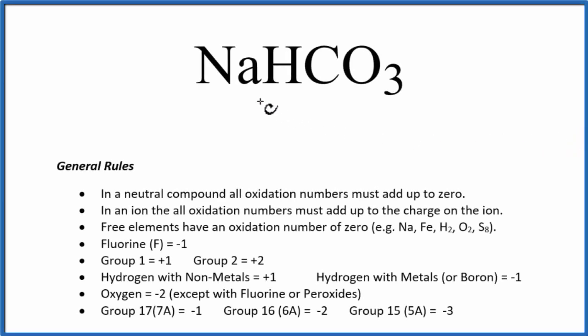To find the oxidation numbers for each element in NaHCO3, we'll use these rules here and a periodic table. We can see that NaHCO3 is a neutral compound because there's no plus or minus charge like you'd have with an ion. In a neutral compound, all the oxidation numbers are going to add up to zero.